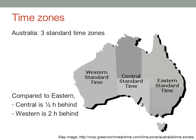Actually, it's a little more complicated in practice because Broken Hill in New South Wales follows Central Standard Time, and there are even some places in the eastern part of Western Australia that have their own time zone between Western Time and Central Time. But I'm going to ignore those issues here.